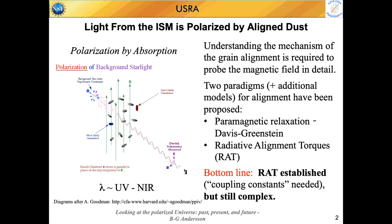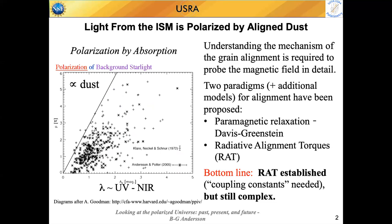My first minor quibble with Brandon is that I don't think the dust and the polarization are well correlated. As he also showed in his slide, the upper envelope is well correlated, but this wedge we see here is more or less what my talk is about: why is it that not all the sight lines produce equally good polarization?